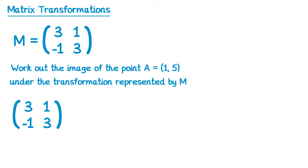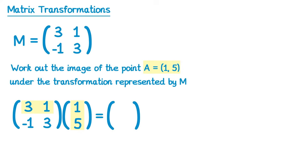So we'll start with matrix M, then write the point A (1, 5) in matrix form, and multiply them. We do 3 1 with 1 5: 3 times 1 is 3, 1 times 5 is 5, and 3 add 5 is 8. Then we do -1 3 with 1 5: negative 1 times 1 is negative 1, 3 fives are 15, and negative 1 add 15 is 14. So (8, 14) written as a coordinate represents the image, which we label A dashed. The answer is A dashed equals (8, 14).